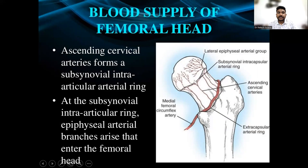An ascending cervical branch gives rise to the subsynovial intracapsular arterial ring. At this ring, epiphysial arterial branches arise that enter the femoral head. The ascending cervical branches are derived from the medial circumflex femoral artery, which forms the subsynovial intracapsular arterial ring and gives rise to the epiphysial arterial group.